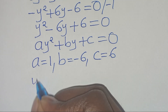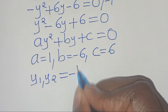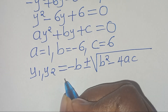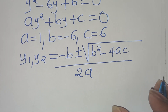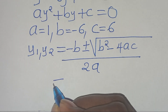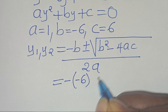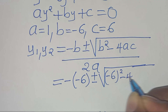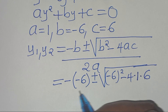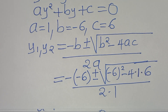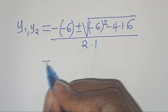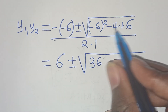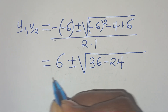For y1 and y2, we apply the quadratic formula: minus b plus or minus the square root of b squared minus 4ac, all divided by 2a. Substituting the values: minus(minus 6) plus or minus the square root of (minus 6) squared minus 4 times 1 times 6, all divided by 2 times 1. This gives 6 plus or minus the square root of 36 minus 24, all divided by 2.